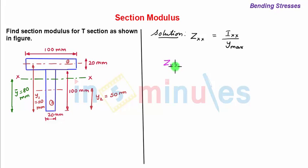So we get the value of zxx as ixx is 5.33 into 10 to the power 6 upon ymax is a maximum vertical distance of farthest point from the neutral axis. So we see that the farthest point will be the bottom most point which is at a distance 80 mm. So we have 80 mm.